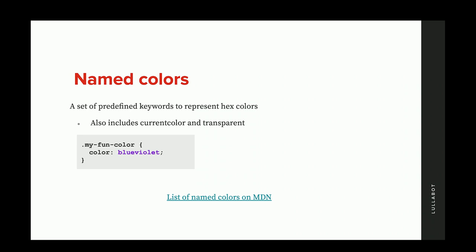Next, there are named colors — predefined keywords that represent hex colors. You might have done this before you learned hex because it's easier to visualize. For example, you can write 'blueviolet' and that maps to the corresponding hex value. There's a whole list of named colors on MDN. The big limitation is that not every hex value has a named color, which is why you'd use hex if you want to fine-tune your colors.